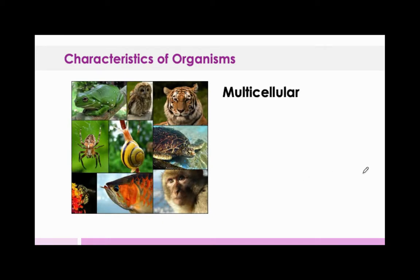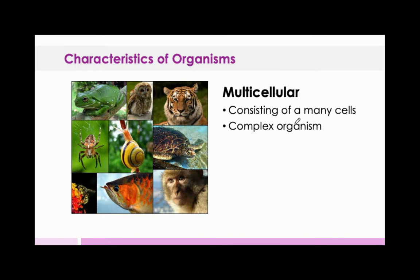The next characteristic is multicellular. If we're going to have unicellular, the opposite is going to be multicellular — consisting of many cells. So long as it has more than one cell, it is multicellular. These are complex organisms, and most of them can be seen with the naked eye.